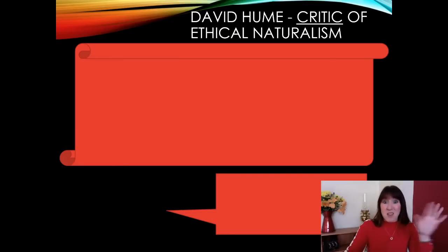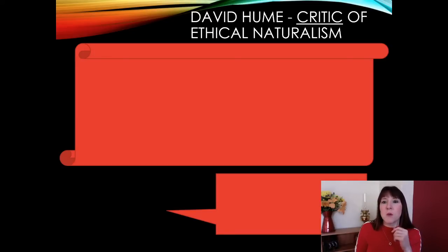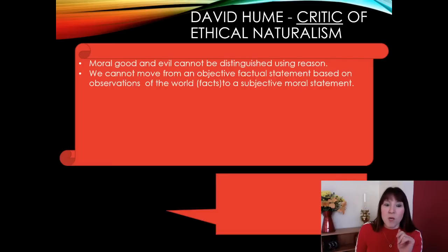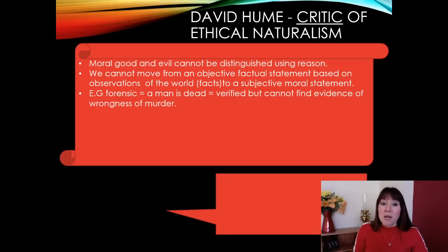That's the argument — ethical naturalism done. The easiest way to discuss it in your exam is to give an example and use it to break down the different parts. However, David Hume is a critic. He says moral good and evil cannot be distinguished using reason. We cannot move from an objective factual statement based on observations of the world to a subjective moral one. For example, forensically: 'A man is dead' is a verified fact, but you cannot find evidence of the wrongness of that murder. This led to what is known as Hume's Law.